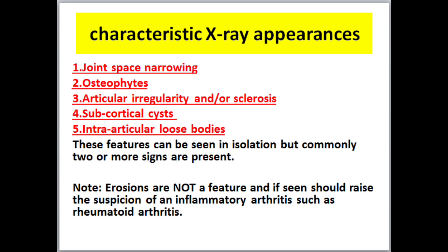Characteristic X-ray appearances include: one, joint space narrowing; two, osteophytes; three, articular irregularity and/or sclerosis; four, subcortical cysts; five, intraarticular loose bodies. These features can be seen in isolation, but commonly two or more signs are present. Note: erosions are not a feature, and if seen, should raise suspicion of an inflammatory arthritis such as rheumatoid arthritis.